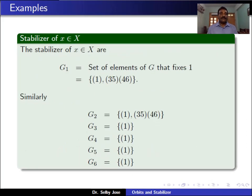What are the stabilizers of the elements? We find stabilizer of 1, stabilizer of 2, stabilizer of 3, 4, 5, and 6. By definition, G_1 is the set of all elements of G that fix 1. Clearly the identity permutation fixes 1, and the permutation (3 5)(4 6) also fixes 1. No other element of G fixes 1. Therefore G_1 contains only two elements: the identity permutation and the permutation (3 5)(4 6). Similarly, G_2 is also {identity, (3 5)(4 6)}. And G_3, G_4, G_5, and G_6 each contain only the identity permutation, as that is the only permutation fixing 3, 4, 5, and 6 respectively.